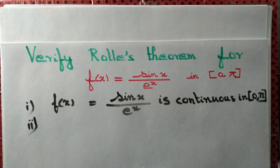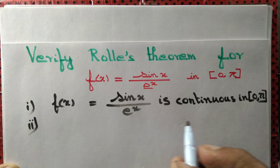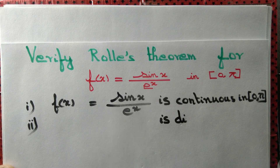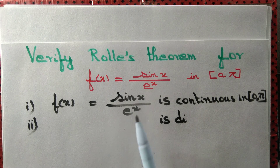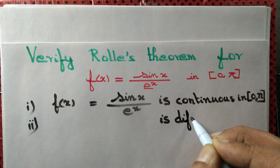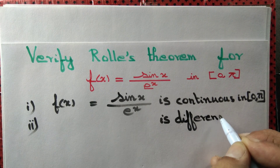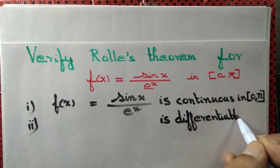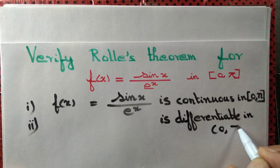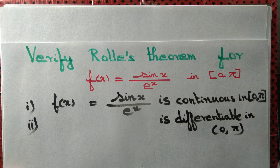Second, to verify Rolle's theorem we need to confirm f(x) is differentiable. sin(x) is differentiable and e^x is also differentiable, and dividing two differentiable functions still gives a differentiable function, provided the denominator is not 0. So f(x) is differentiable throughout, but we just need it on the open interval (0, π), which is satisfied.